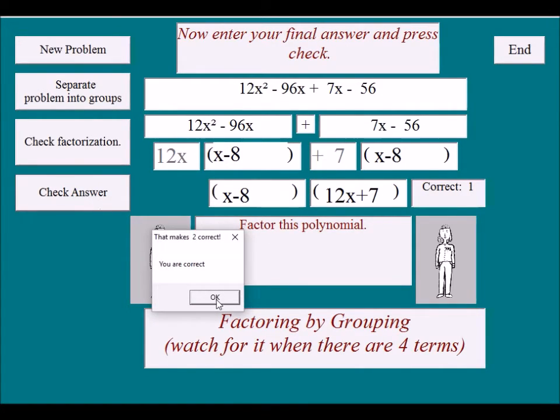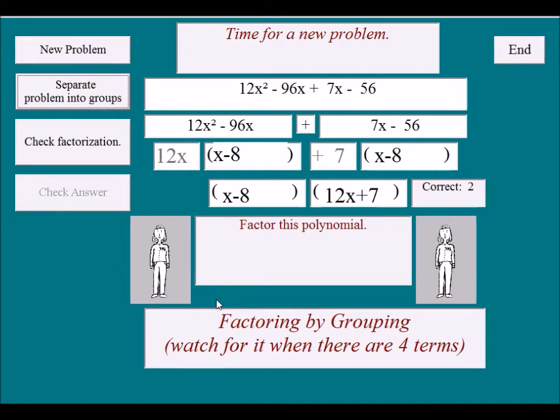So check our answer. We win. That makes 2. Hope you understand factoring by grouping. It wouldn't matter if you put the 12x plus 7 down first and then the x minus 8, because multiplication is commutative and these quantities could be reversed and it would still be the same answer. Thanks. Bye.